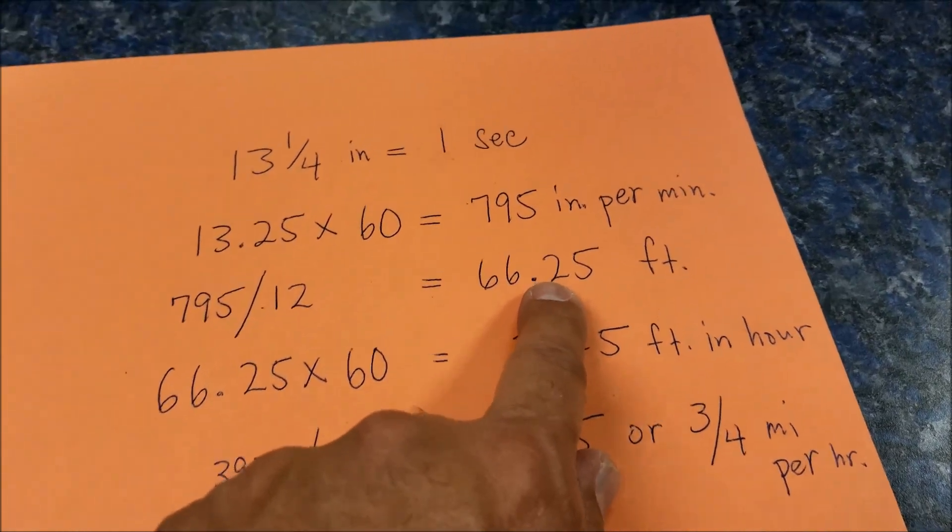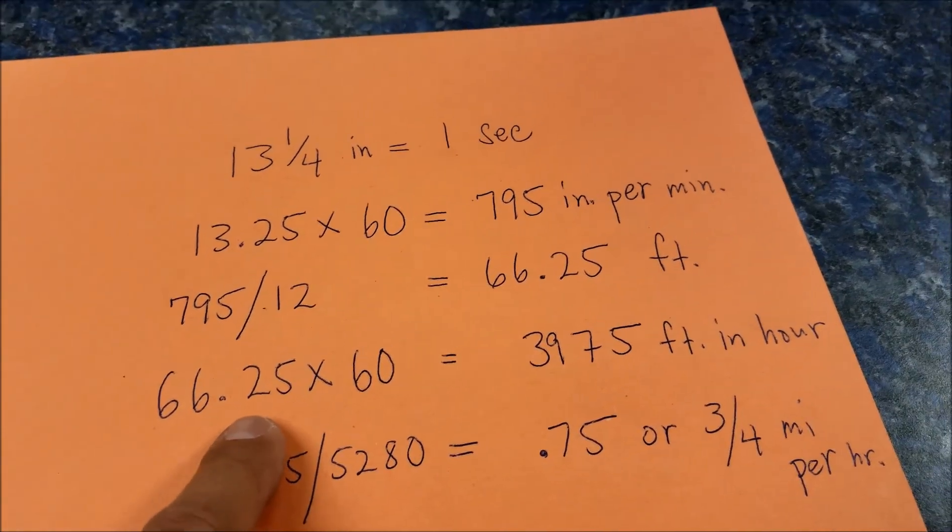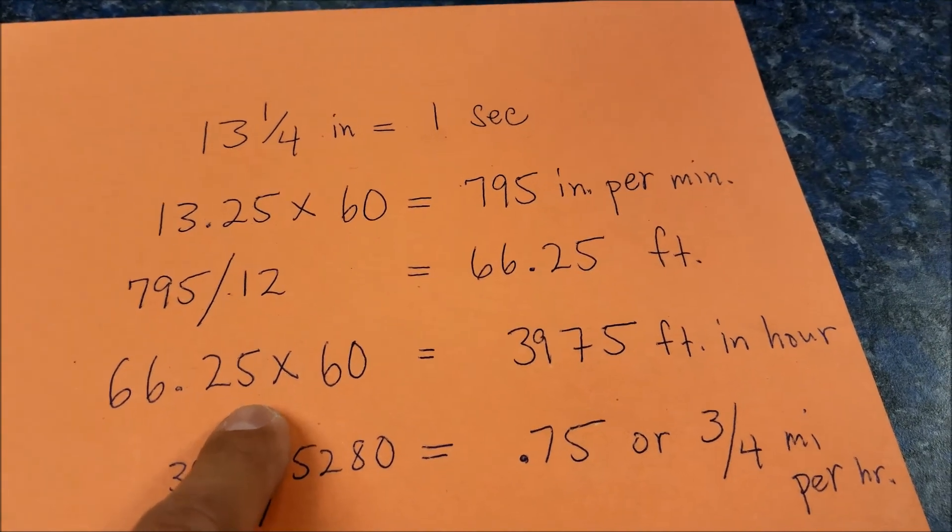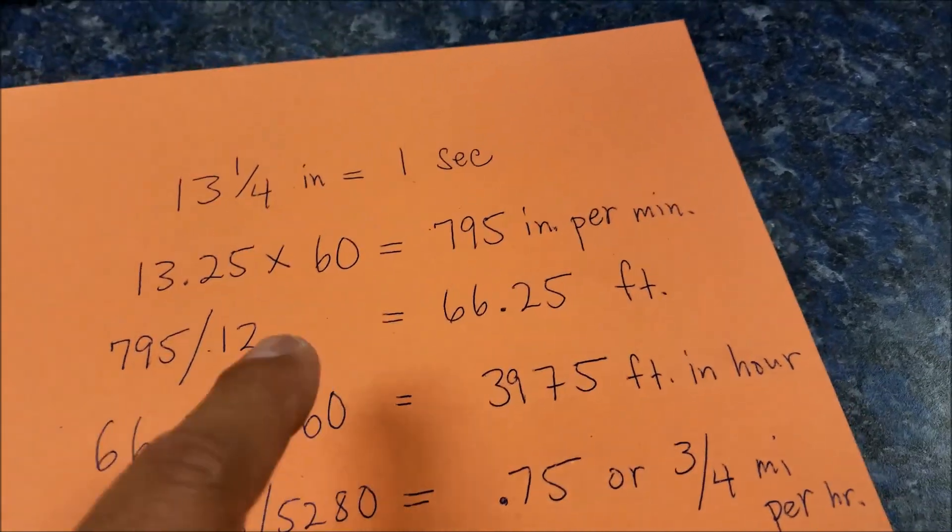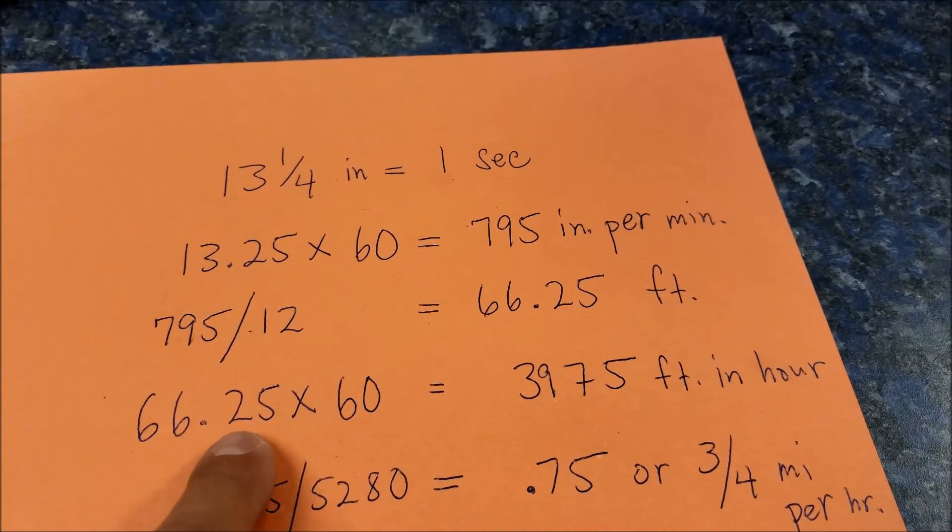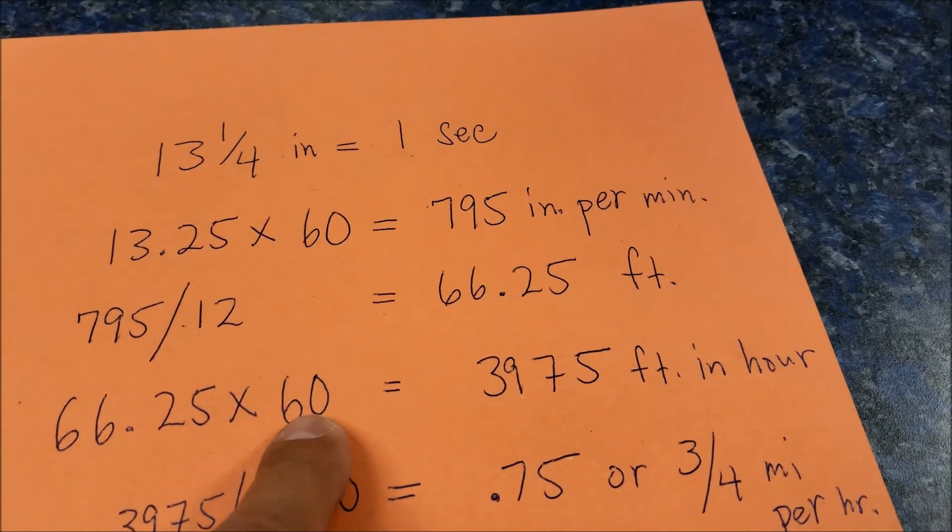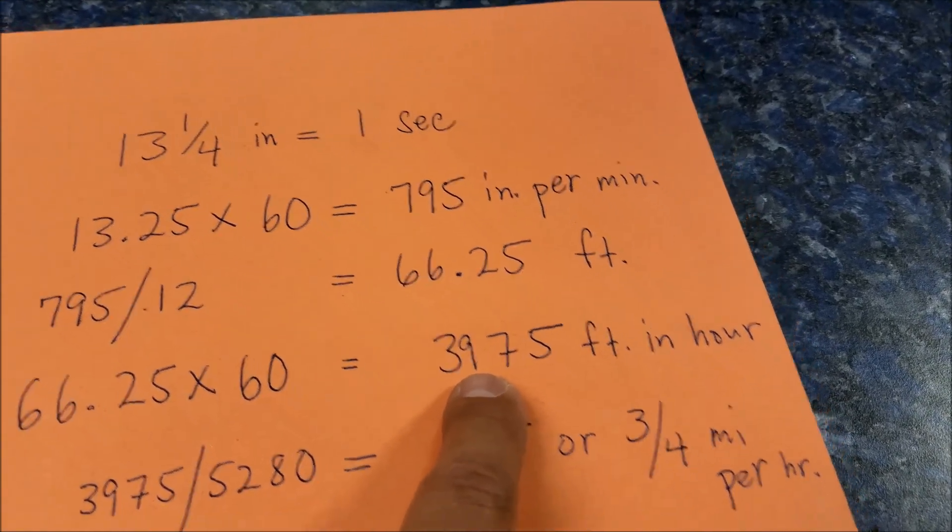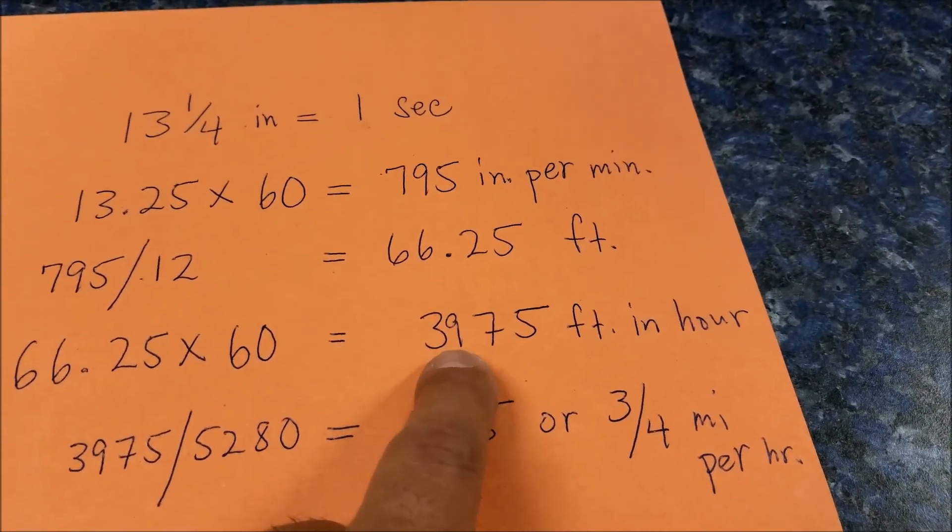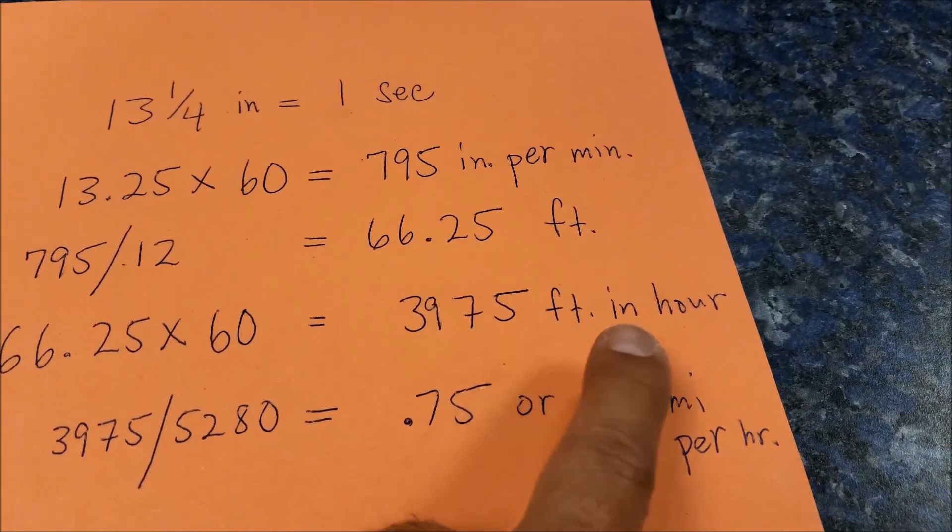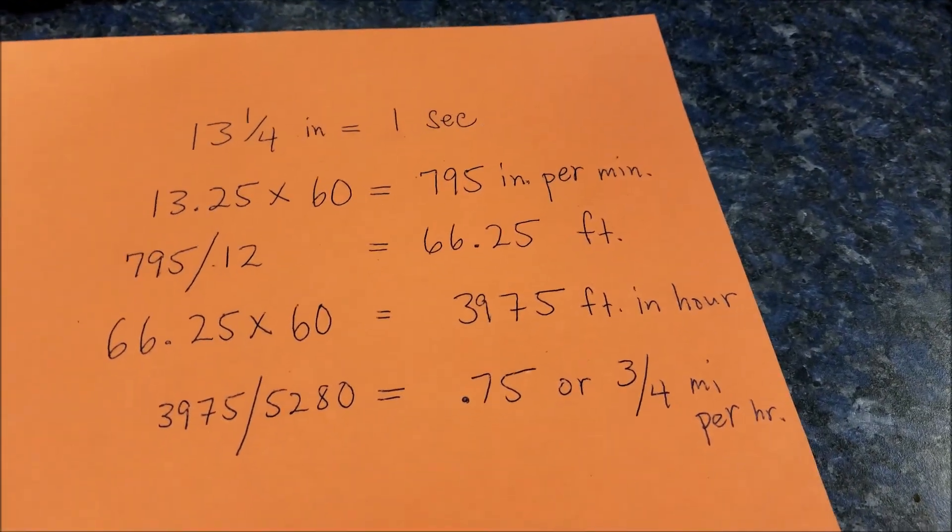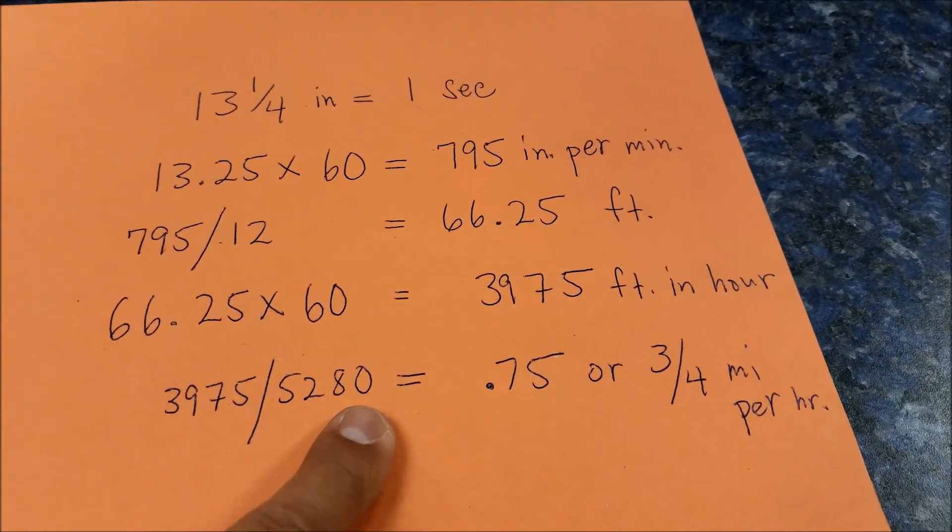Then I wanted to figure out how much would that be in an hour. Since there are 60 minutes in an hour, I multiplied the 66.25 feet by 60 to get this now in an hour. So this robot at 100% speed is going to travel 3,975 feet in an hour, still knowing that that's under a mile an hour because that's 5,280 feet in an hour.